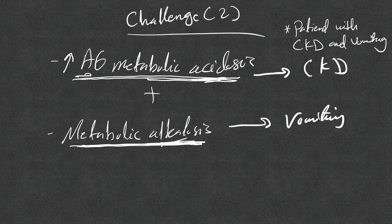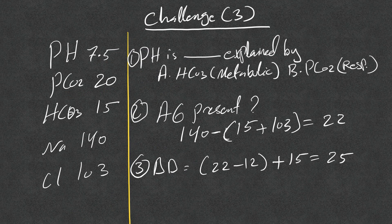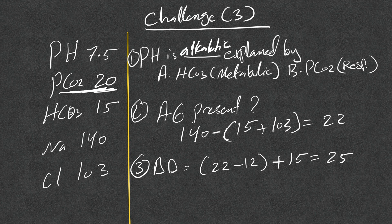Challenge 3: pH 7.5, pCO2 20, serum bicarb 15, measured sodium 140, chloride 103. The pH is alkalotic, and it's explained by the pCO2, which is low — using 40 as normal. So this is a primary respiratory alkalosis. We jump to the anion gap regardless, and here the anion gap is 22. There is high anion gap metabolic acidosis present, so we proceed to the delta-delta.